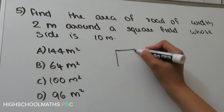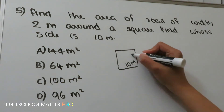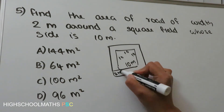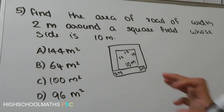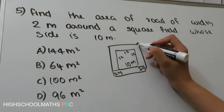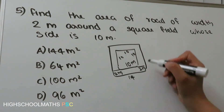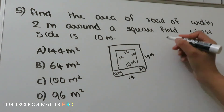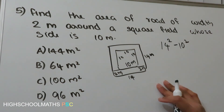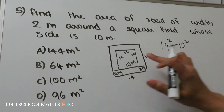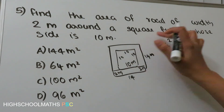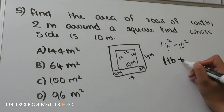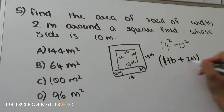Here we have a square field with side 10m. When we add a 2m road all around, the outer square becomes 14m. Normally we do 14 squared minus 10 squared. Using the rectangular formula, L plus B plus 2W into 2W, where L plus B is 20m for the square and 2W is 4.